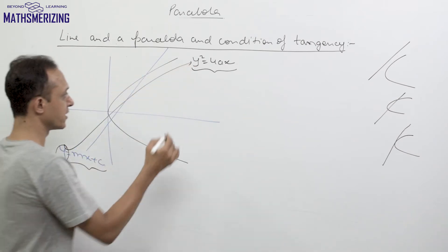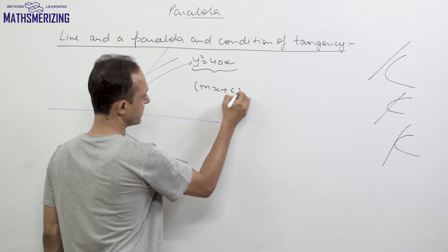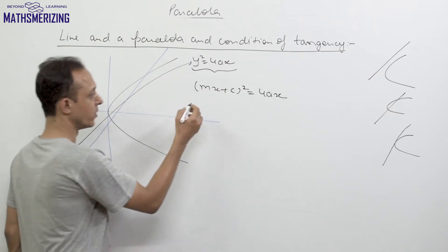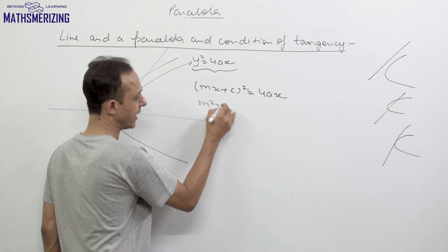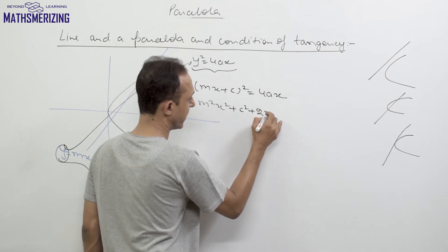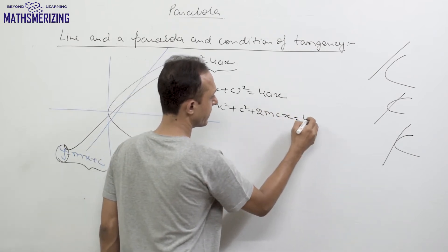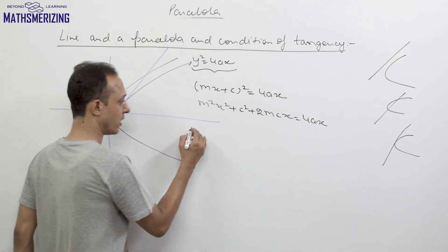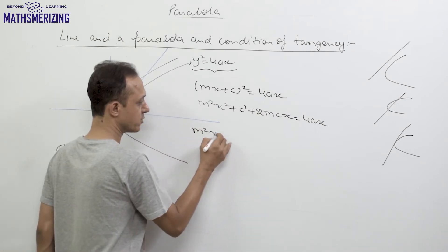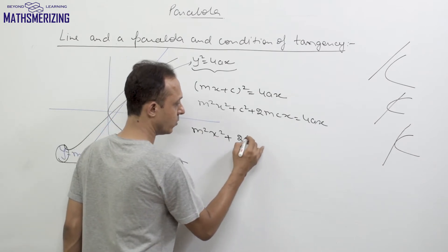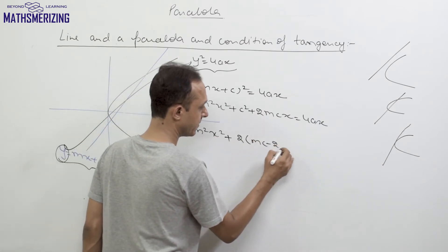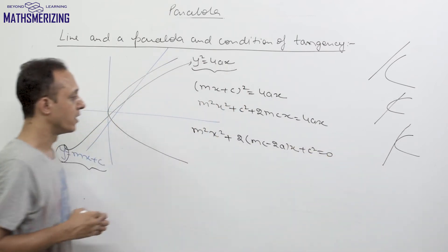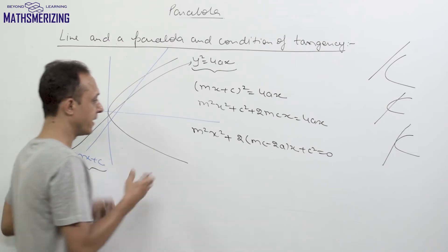For the point of intersection I can write (mx + c)² = 4ax. Opening the square gives m²x² + 2mcx + c² = 4ax. Rearranging as a quadratic equation in x: m²x² + 2m(c − 2a)x + c² = 0. This is a quadratic equation in x.